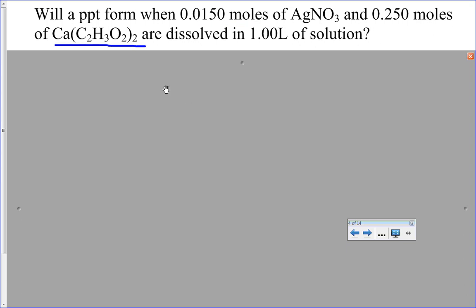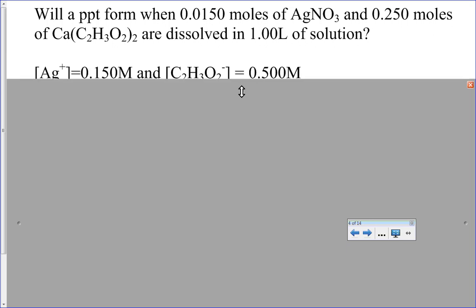So we have to figure out what are those concentrations. It's convenient that it was done in one liter because then we can turn it into molarity without too much difficulty. And it's easy to see that if I put 0.015 moles of silver nitrate, I would end up with a 0.015 molar solution.